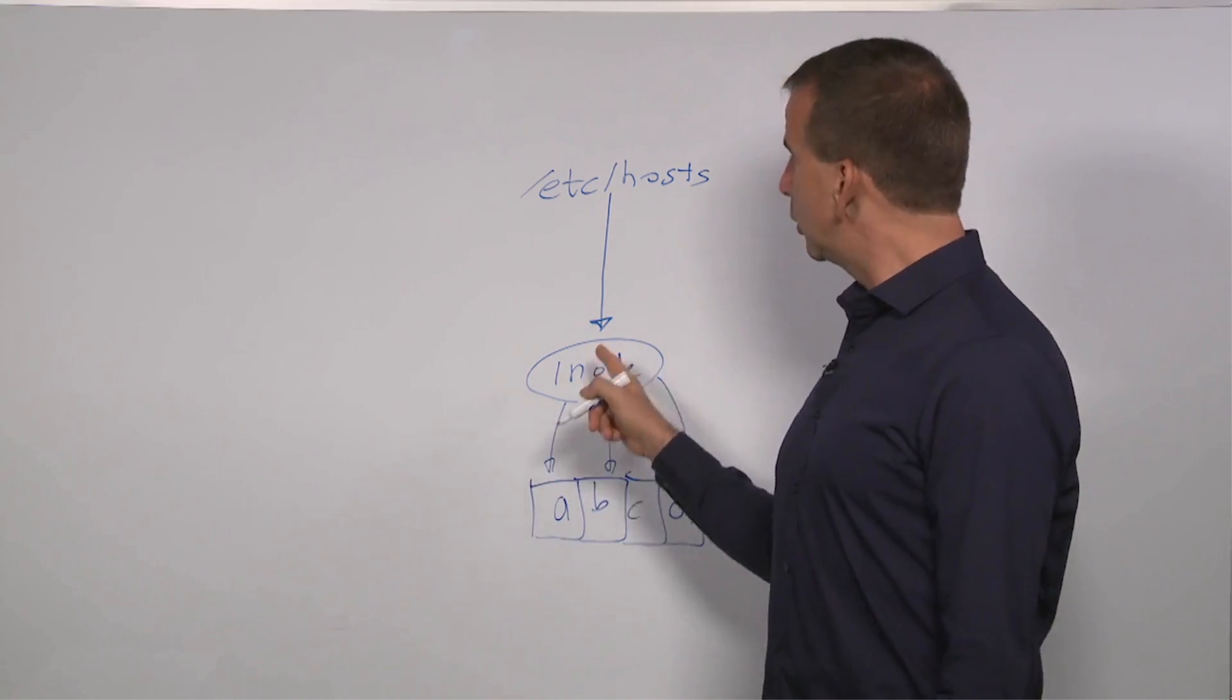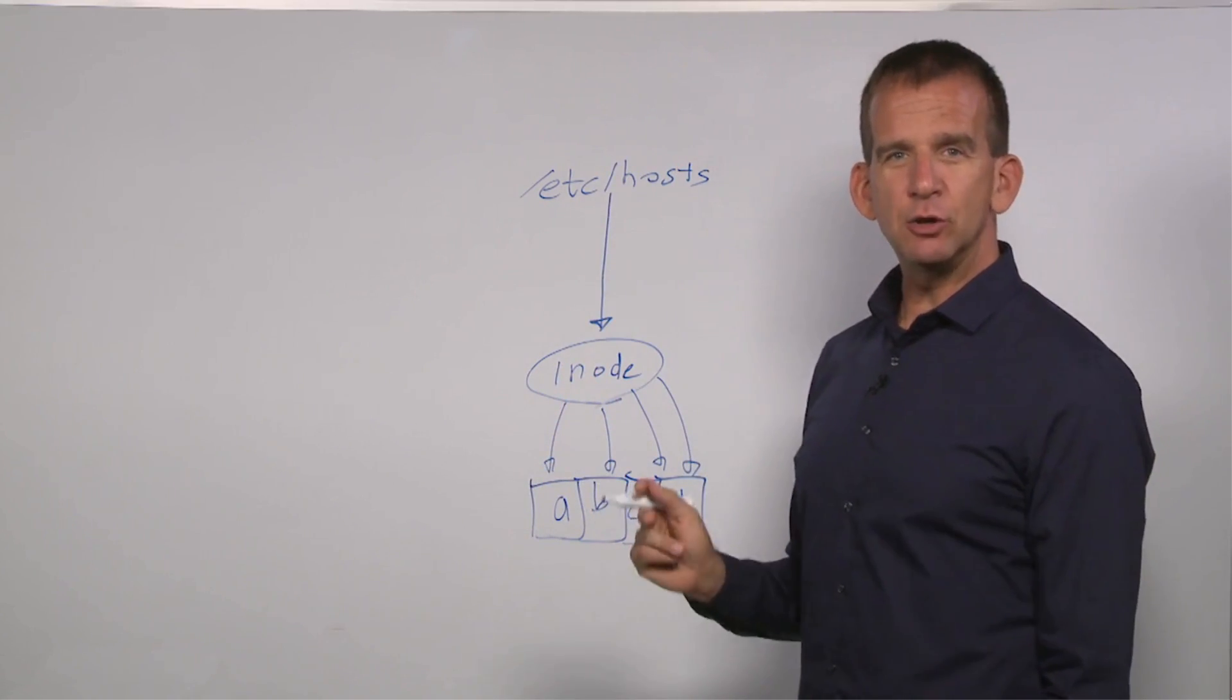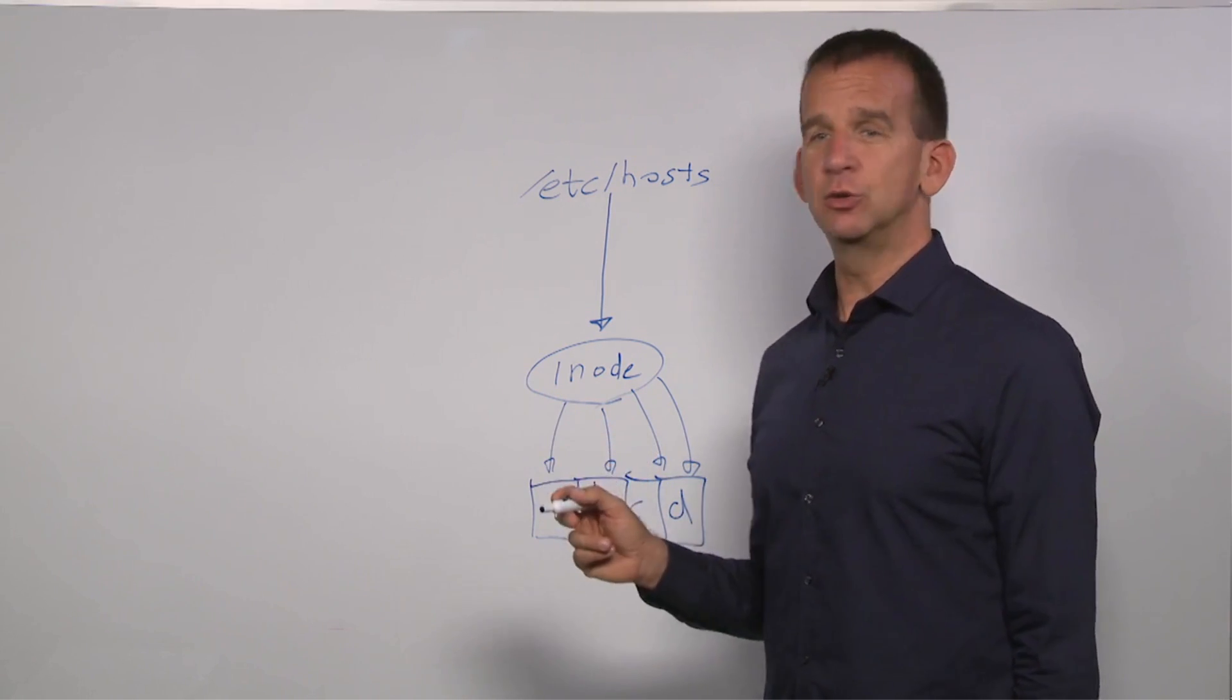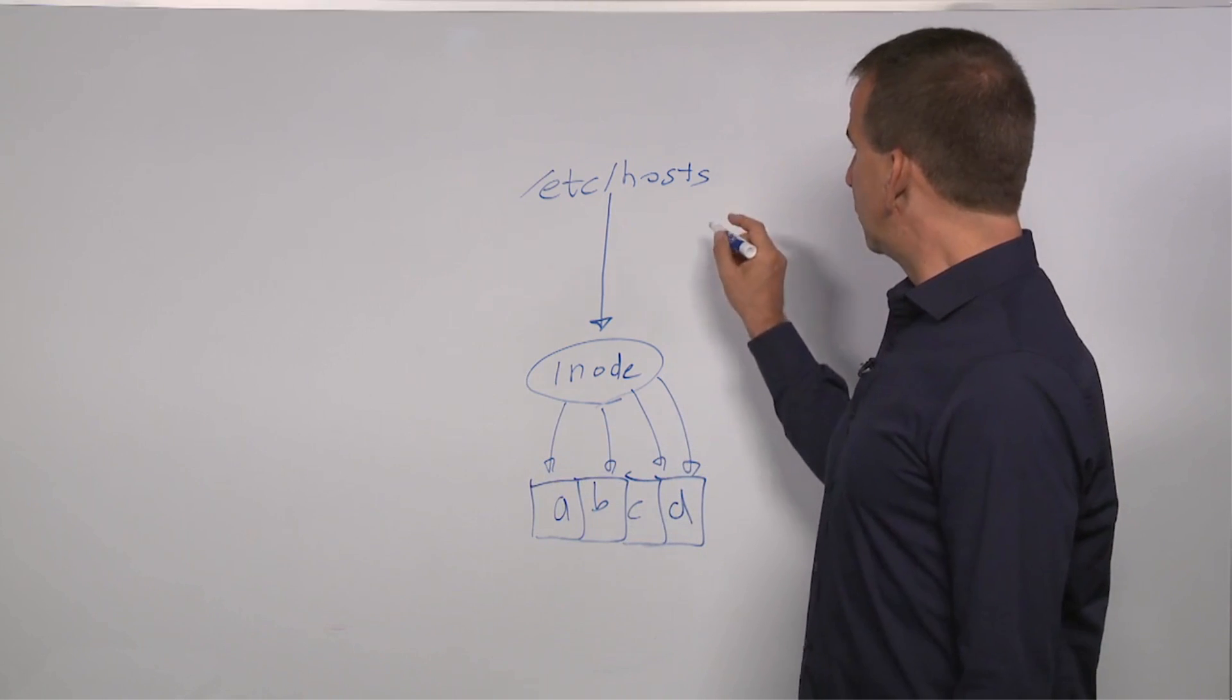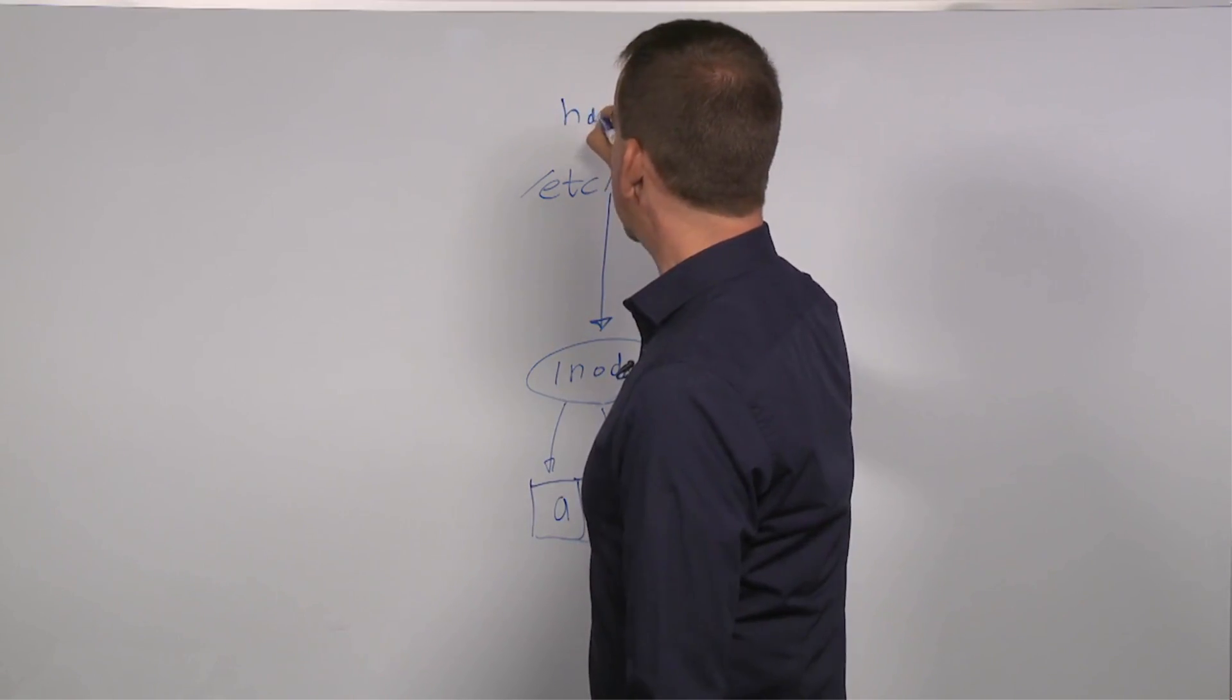but the inode is not aware of the file names that it has. It has a counter to count the number of names that are assigned to it. Now, each of these names, you call that a hard link.